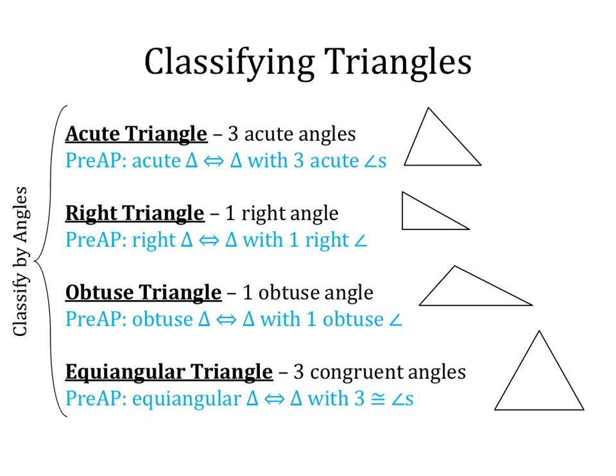Next, we have right triangles. Right triangles have one right angle, so you'll see the little square in the corner that represents a right angle. Then we have obtuse triangles. Obtuse triangles only have one obtuse angle. And then lastly, we have an equiangular triangle, which has three congruent angles — all three angles must be equal to each other.